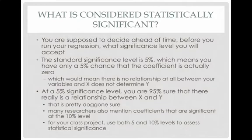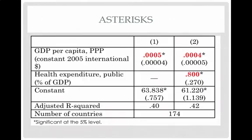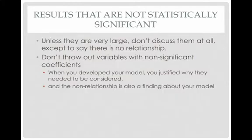Many researchers also mention coefficients significant at the ten percent level, meaning you're ninety percent sure the relationship is real. For your class project, use both five and ten percent levels to assess statistical significance. Statistically significant coefficients are typically marked with asterisks. If something is significant only at ten percent, use a dagger sign — ask the instructors if you're in that situation.